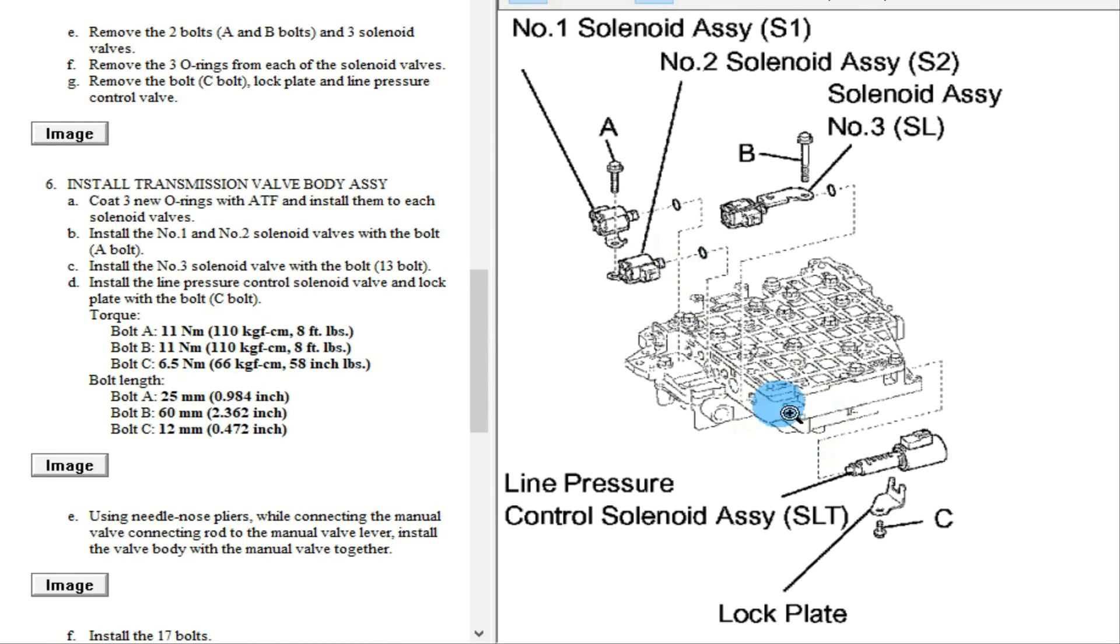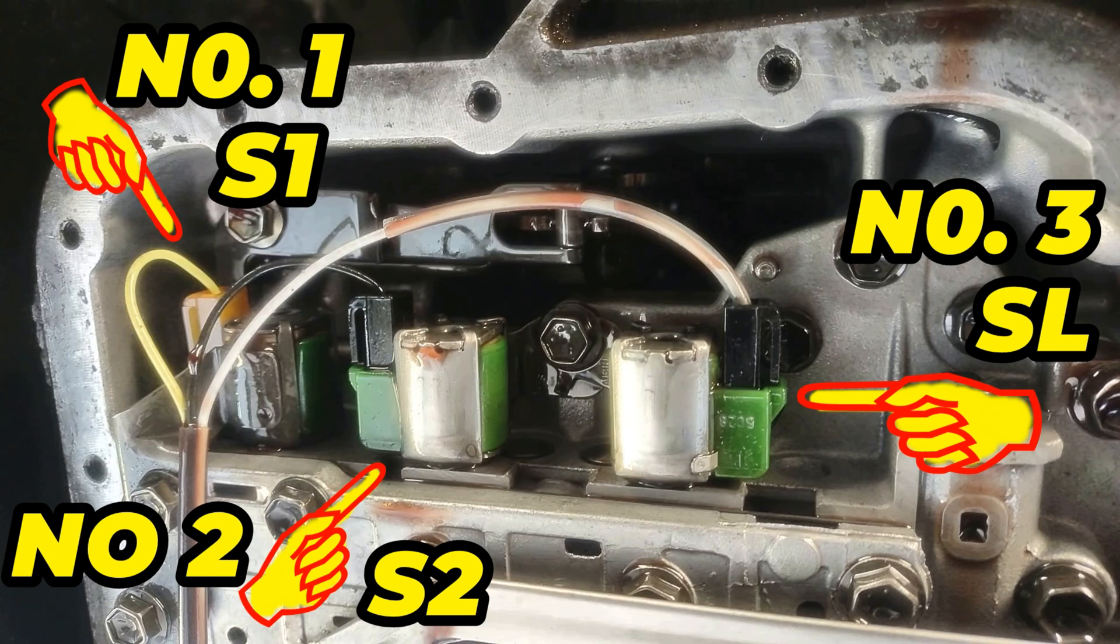Alright, here are all the solenoids as you can see: number 1, number 2, and number 3 here. And this is the SLT on this side. These 3 here are lining up, and this is the SLT on this side, single here on this side. And this is how they are located like this as you can see. And this is another image here, another angle.